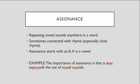The first on the list is assonance. Assonance is any time we have a repeating vowel sound that happens anywhere in the word — in the beginning, in the middle, or at the end. Sometimes these are connected with rhyme, which is partly true but not always. To remember assonance, note that it starts with an A, and A is a vowel — that'll help you keep it straight.